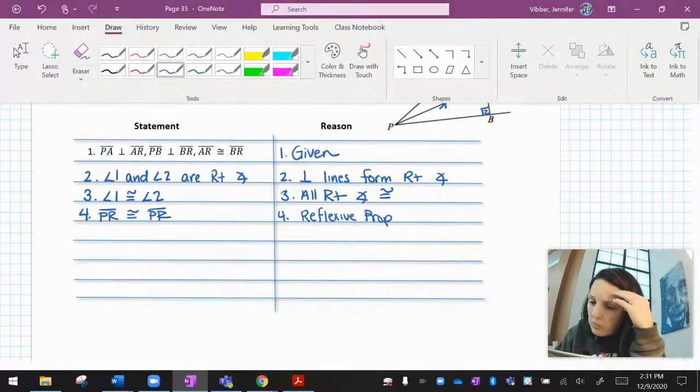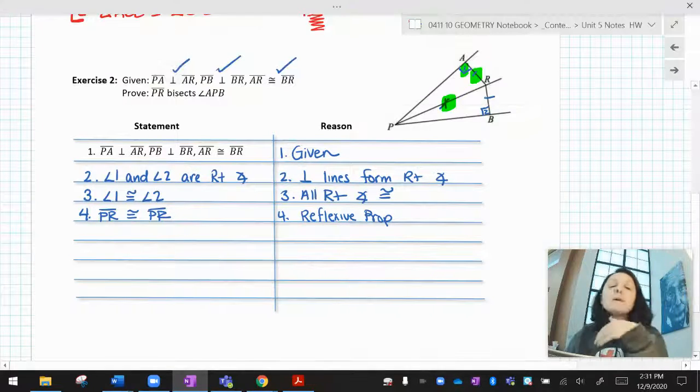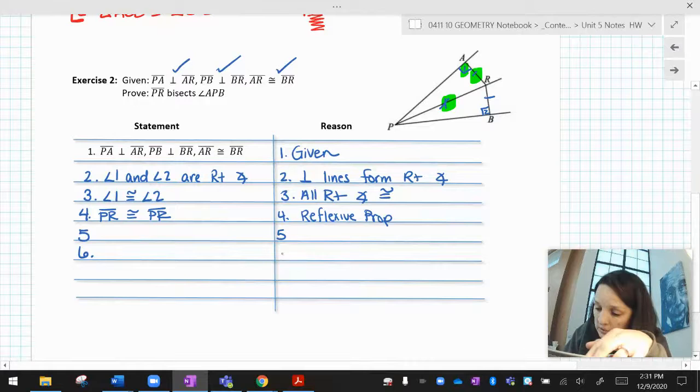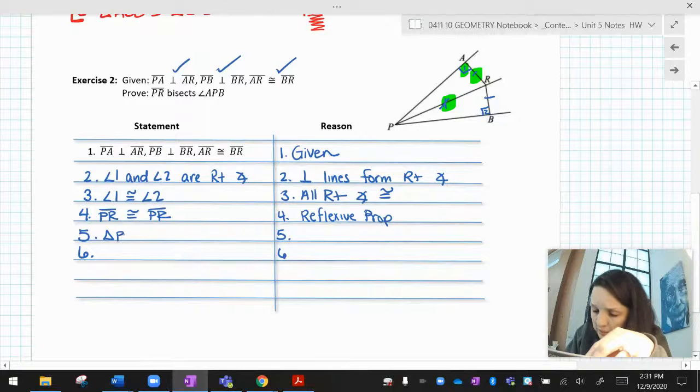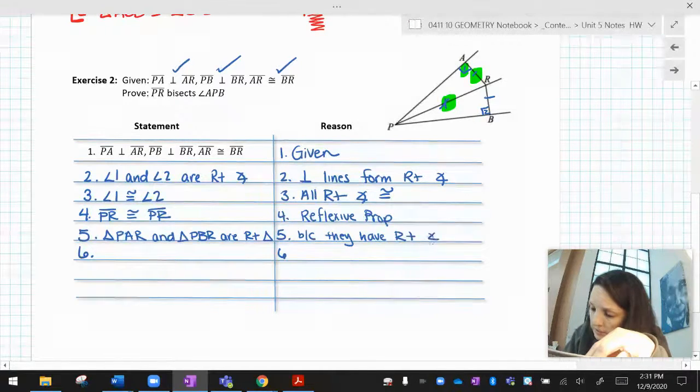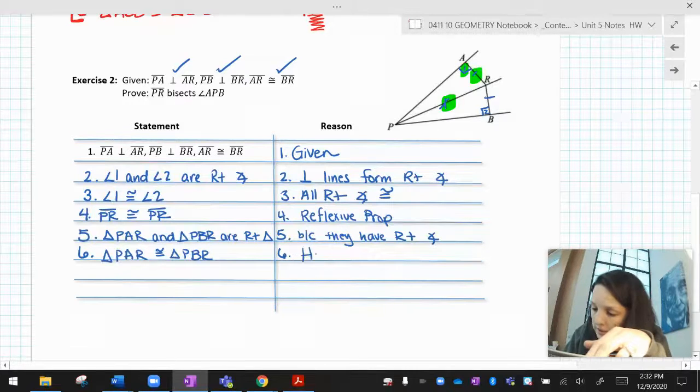And so now if I look at what I have marked, I have an angle, a side, and another side. That's ASS. But since my angle is a right angle, I can call it HL. HL takes two steps. So I can say that the two triangles are right triangles. So PAR and PBR are right triangles. And that's because they have right angles. And then based on that, PAR is congruent to PBR by HL.